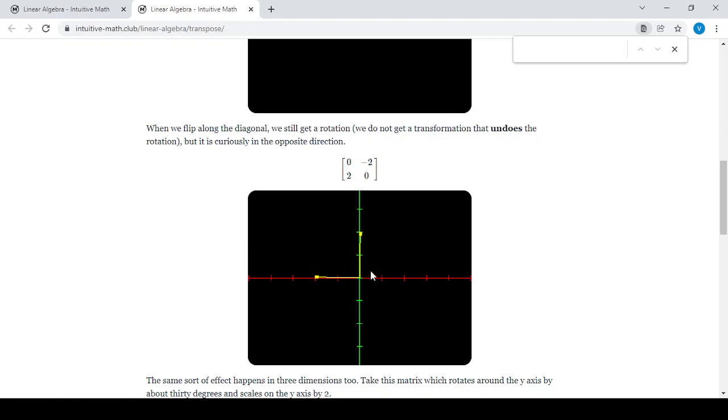The algebraic definition is pretty simple. Exchange your rows and columns of a matrix and you get a transpose. But why do we do that? What is the intention behind that?